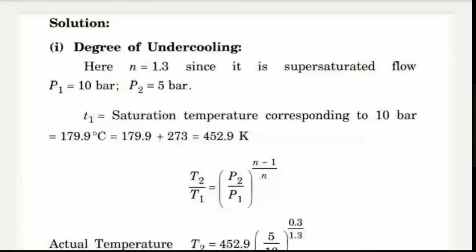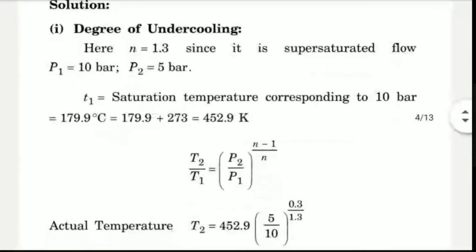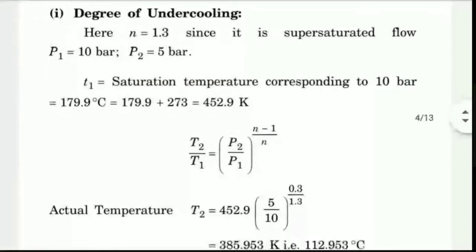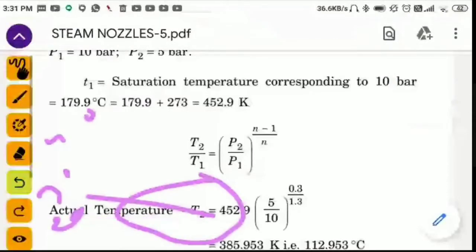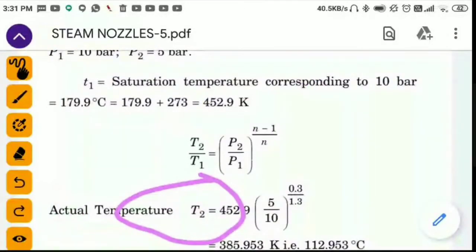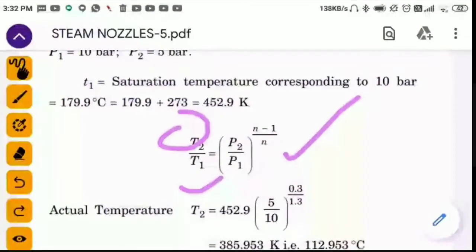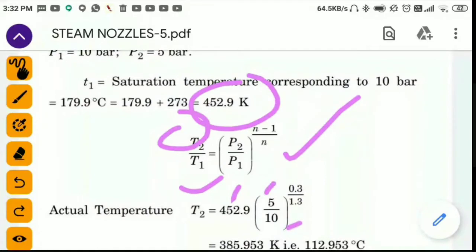So if you consider T1, we are going to have a saturation temperature from the steam tables. What is T1? T1 is the saturation temperature corresponding to 10 bar, which equals 179.9 degrees Celsius equals 452.9 Kelvin. P2 is 5, P1 is 10, N is 1.3 minus 1.